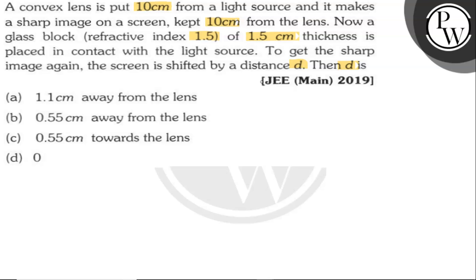So here we have a convex lens which is 10 cm, and the image distance is 10 cm. Now we have a glass block which has a thickness of 1.5 cm.